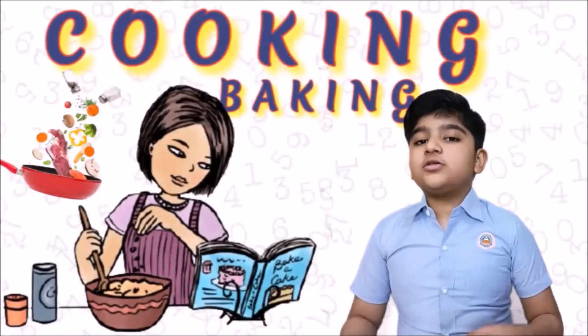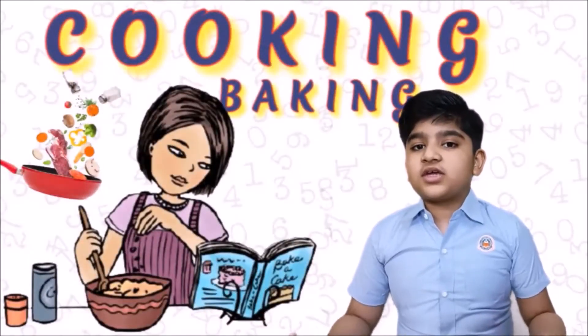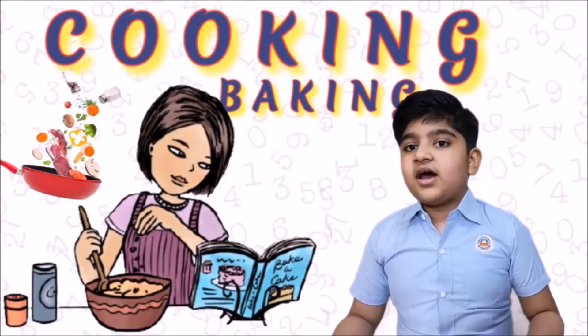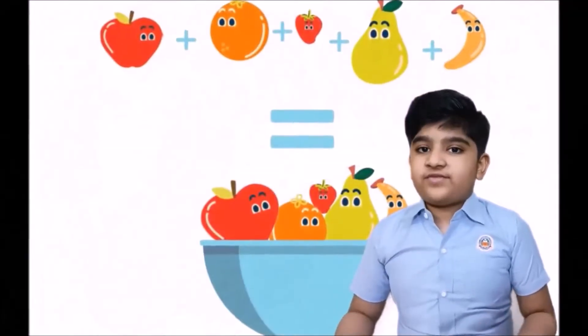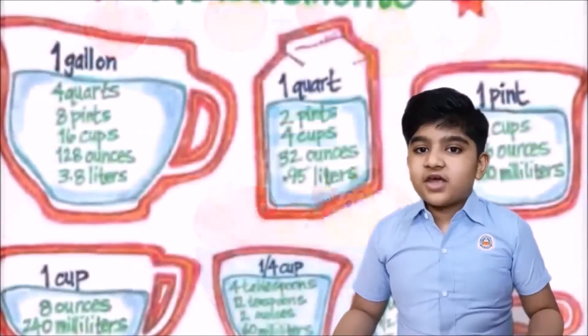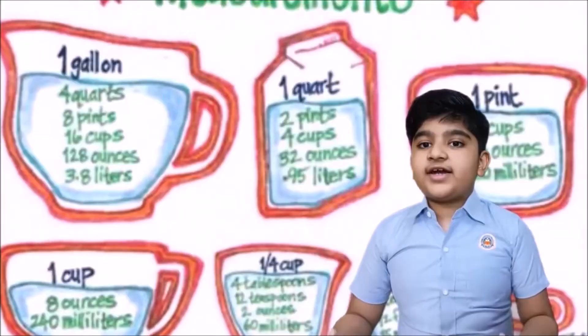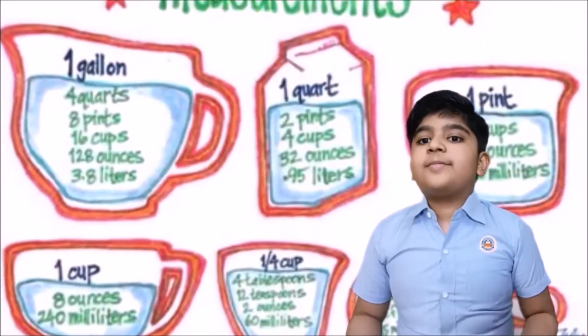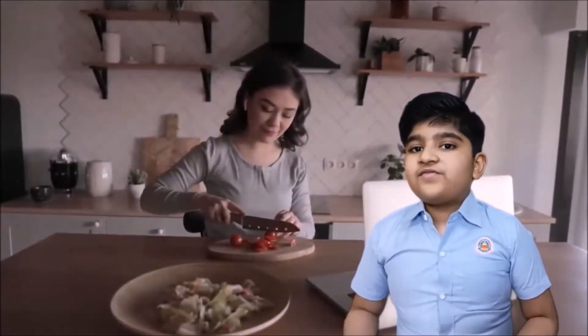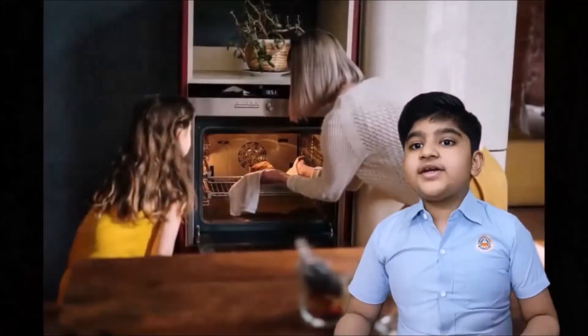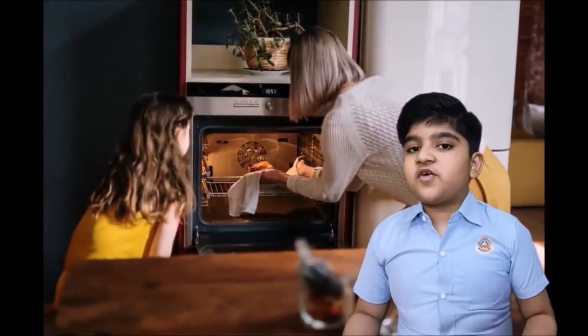Math is also used in cooking. Ingredient measurements are the basic fundamentals when we cook and bake. We use weight, volume, proportion, baking time and temperature. For example, we use math to bake a cake at 180 degrees Celsius for 45 minutes.